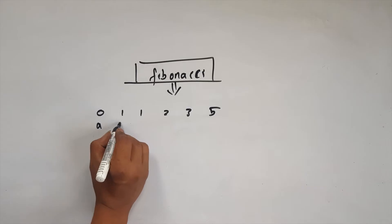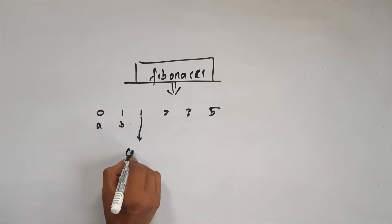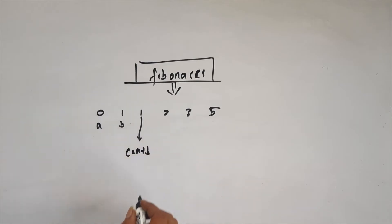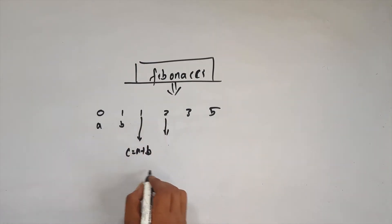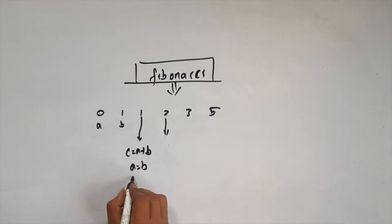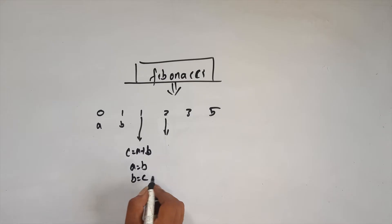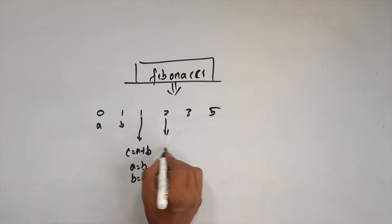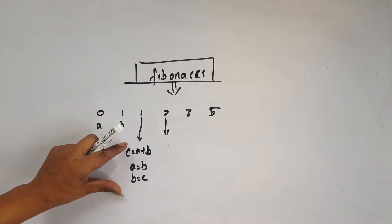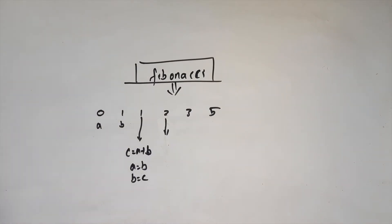This is a and this is b. C is equal to a plus b. This function means that I have to give you numbers. If you want to pass a number, we will give you a number b and send b and c. Then we will show you the number. The recursive function is used in this formula.